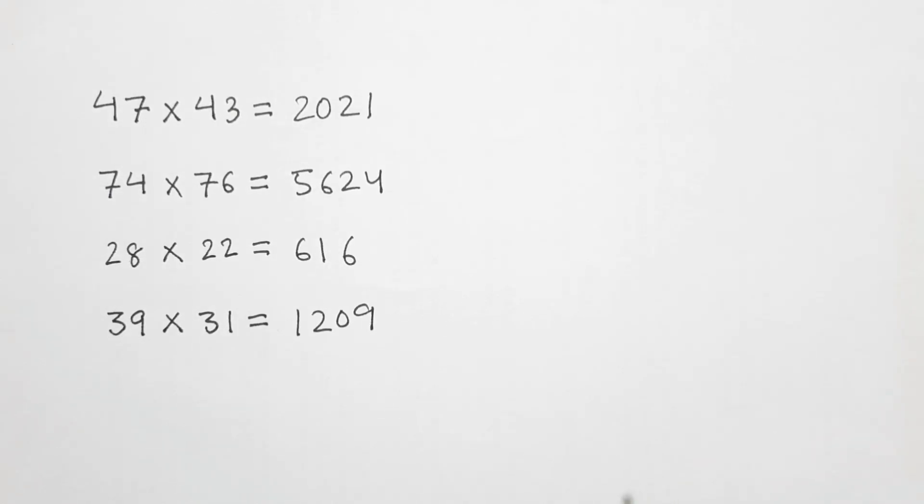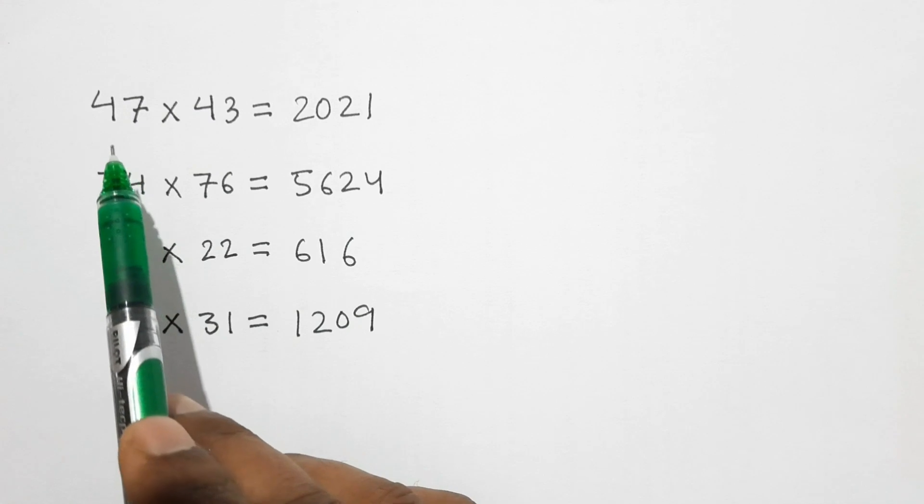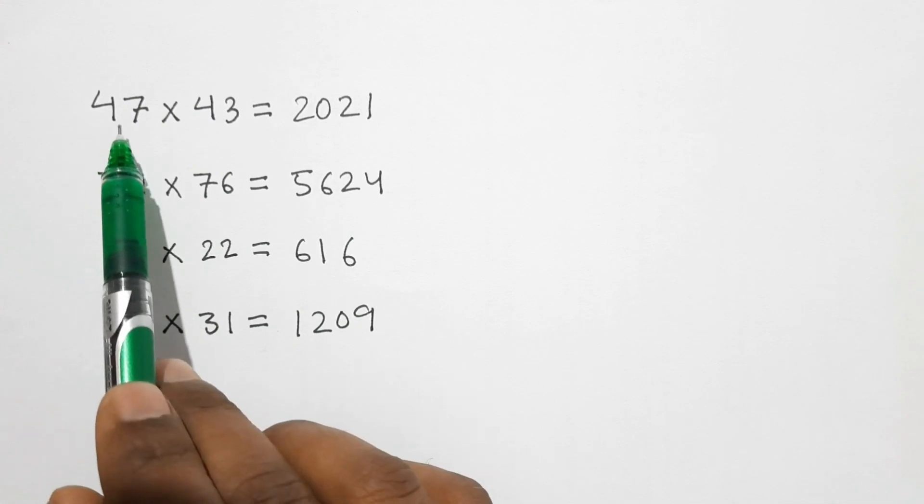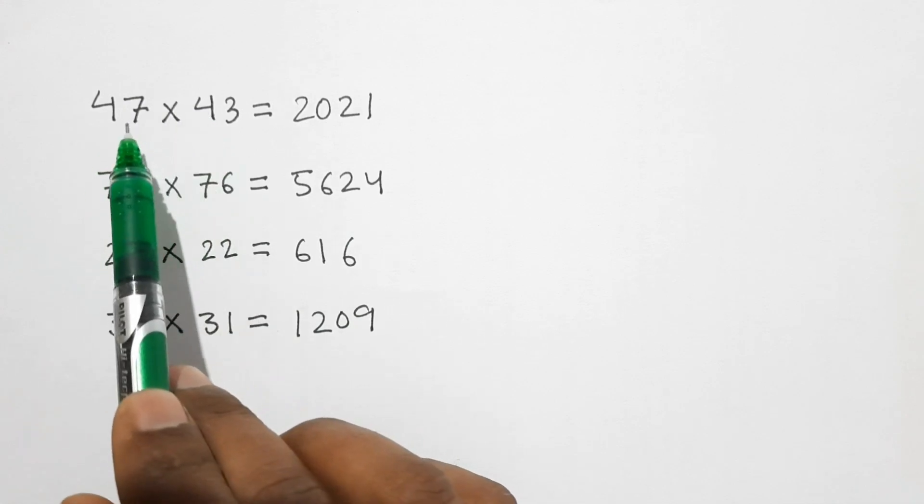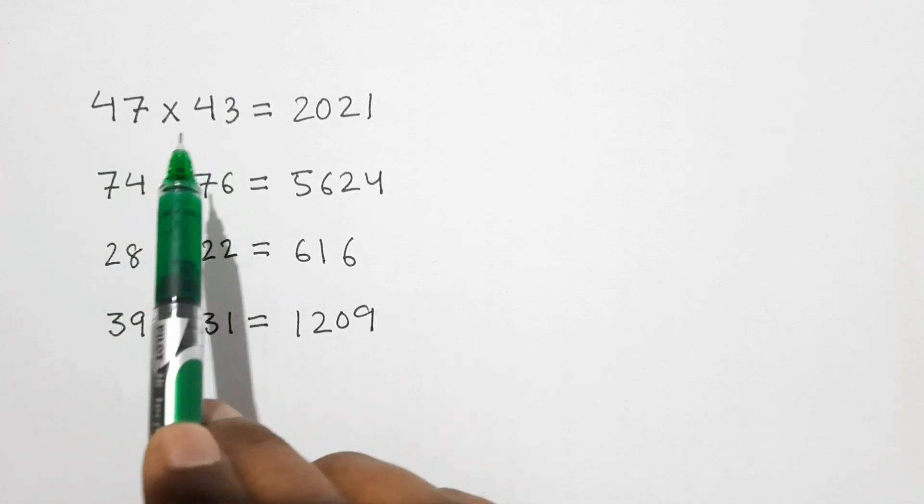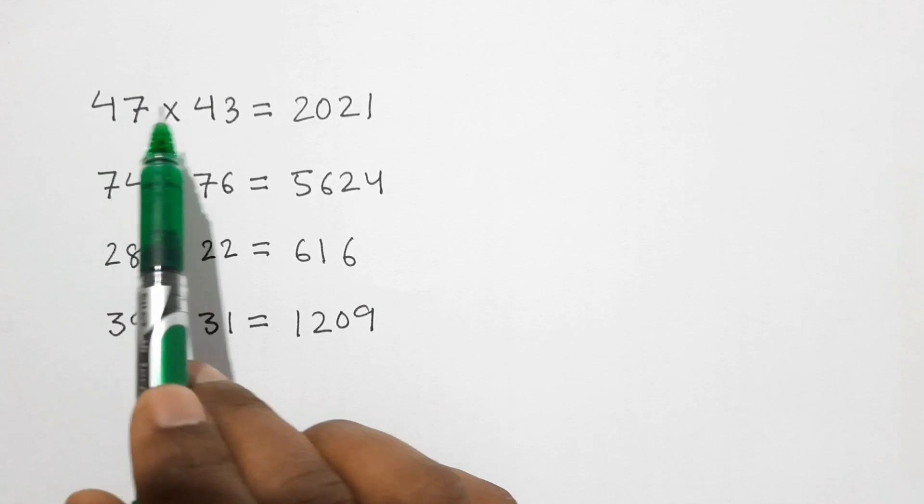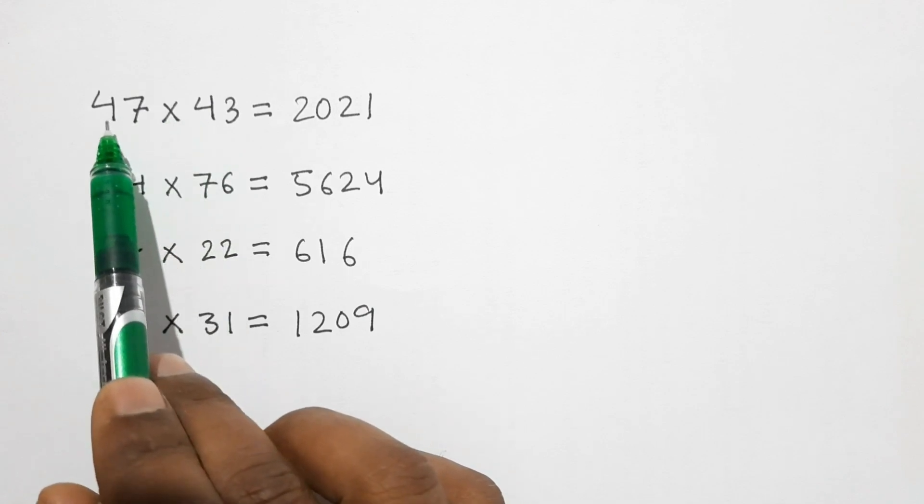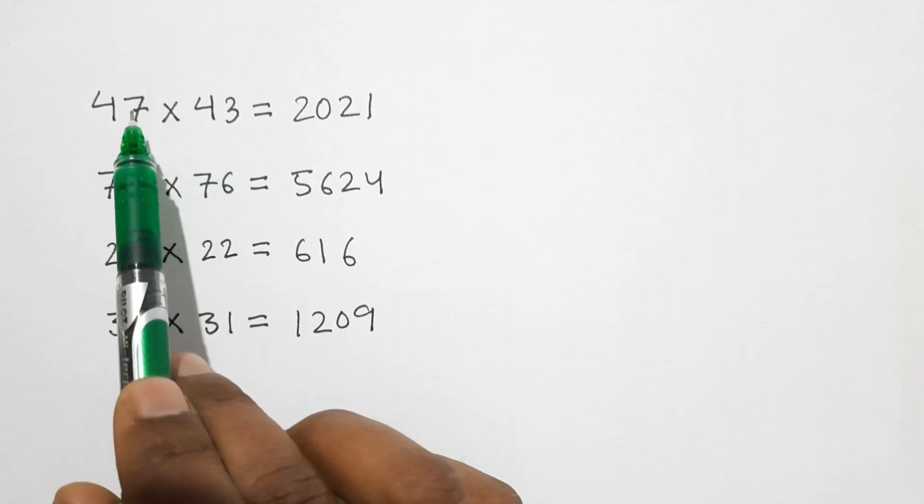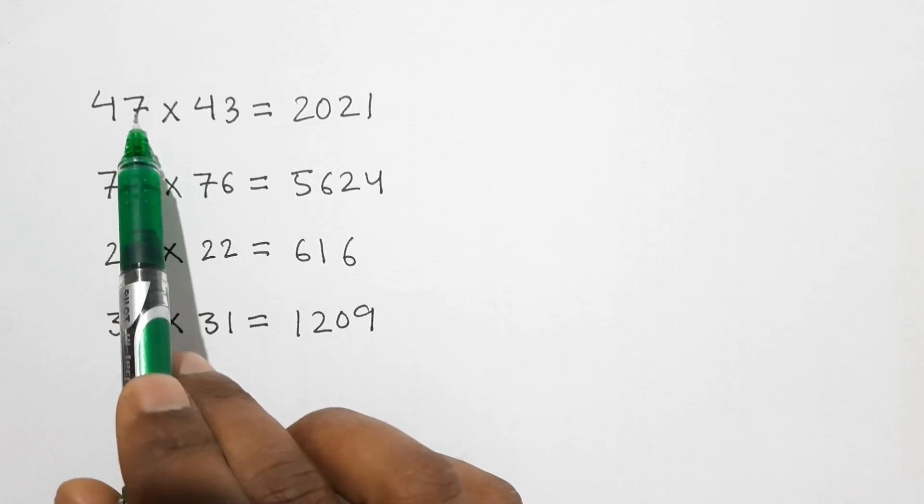Before teaching this trick to you, I want to tell you that this trick can be applicable only to certain types of numbers. Here you can see that the numbers which we multiply have some common things. First we see that the numbers in the tens digit place are the same, that is 4, and the numbers in the units digit are 7 and 3, the sum of which is 10.